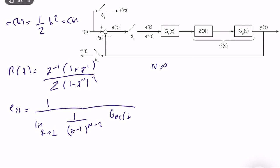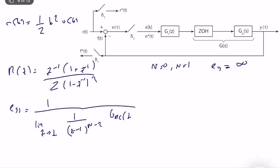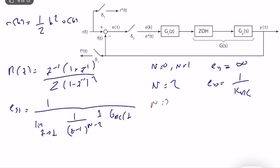For type n = 0 or n = 1: the (z−1)^(n−2) term goes to 0, so steady-state error is infinite. For type n = 2: the terms cancel and steady-state error = 1/K_dc, a constant. For n > 2: the limit goes to infinity and steady-state error = 0.